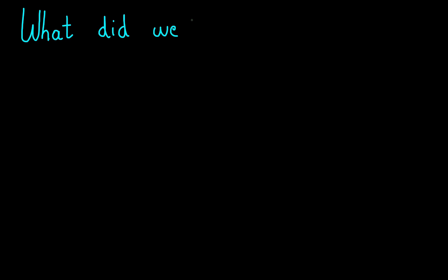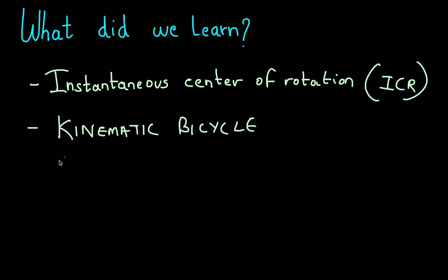So what did we learn in this lecture? We understand what an instantaneous center of rotation is now. It's a point about which a rigid body rotates at a given instant in time. We went through many models and saw how the kinematic bicycle model was the simplest model we could come up with to account for steering effects. We looked at its equations of motion and understand what they tell us. With that, we come to the end of this lecture. Hopefully you've learned something new. And as always, if you do like these videos, please like, subscribe, and share it with your peers. Thank you.